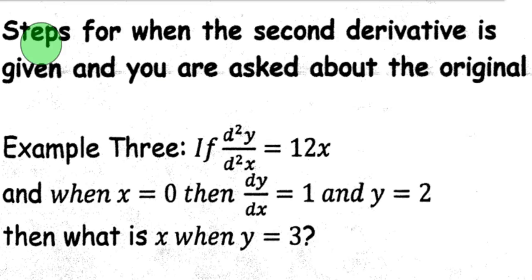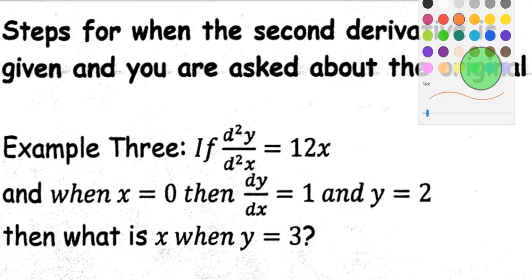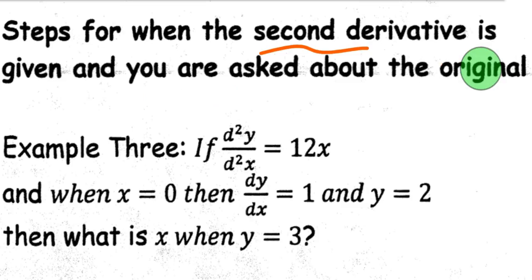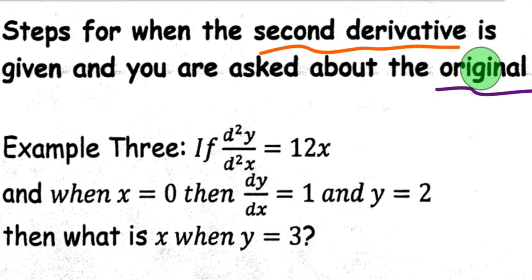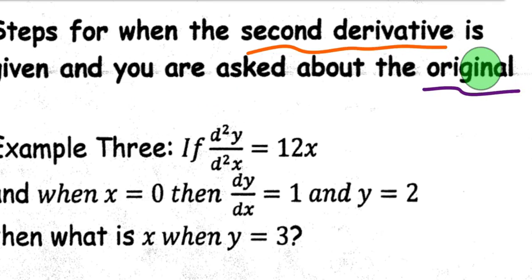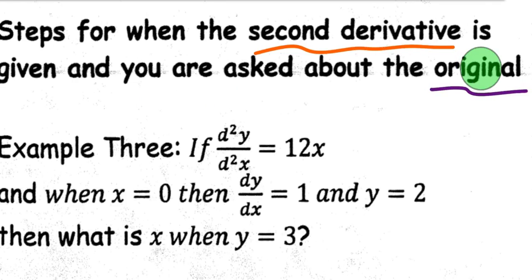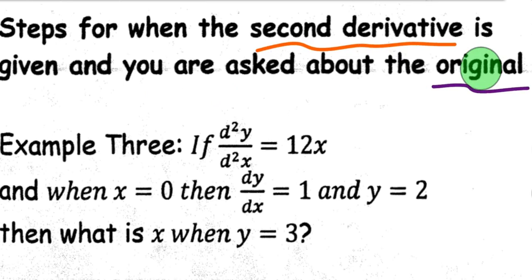We're going to be looking at steps for when the second derivative is given and you're asked about the original. We're going to be given the second derivative and we have to hop all the way back to the original or something about the original function. This requires more information to be given, however the difficulty is really not much different than what we've been looking at.